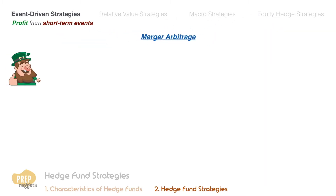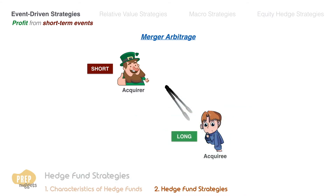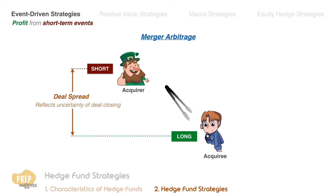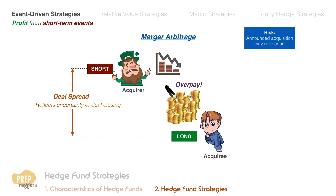Merger arbitrage is the strategy of selling short the shares of an acquiring firm and buying the shares of the firm being acquired. The hedge fund manager seeks to profit from the deal spread, which reflects the uncertainty of the deal closing. It could also be that the manager expects the acquirer to ultimately overpay for the acquisition and its share price suffer consequently. The primary risk in this strategy is that the announced acquisition does not occur.